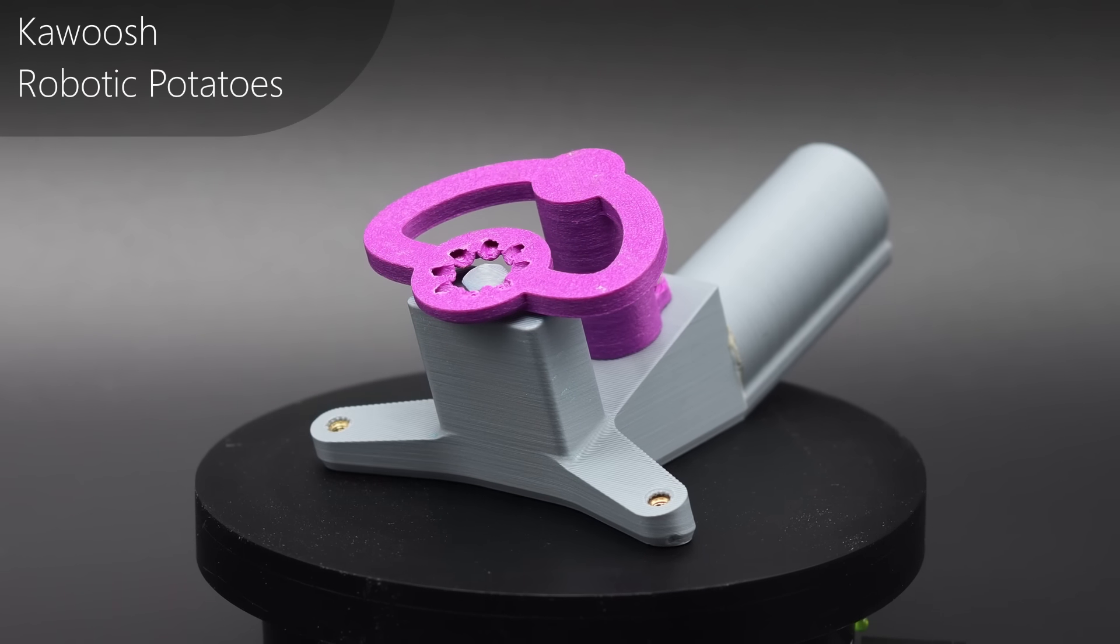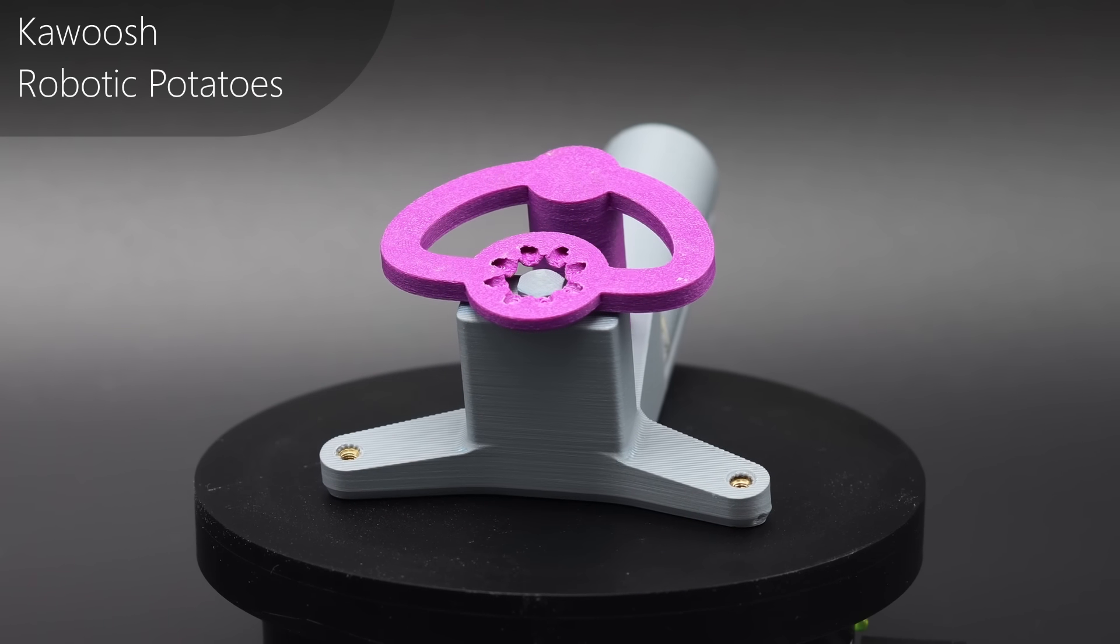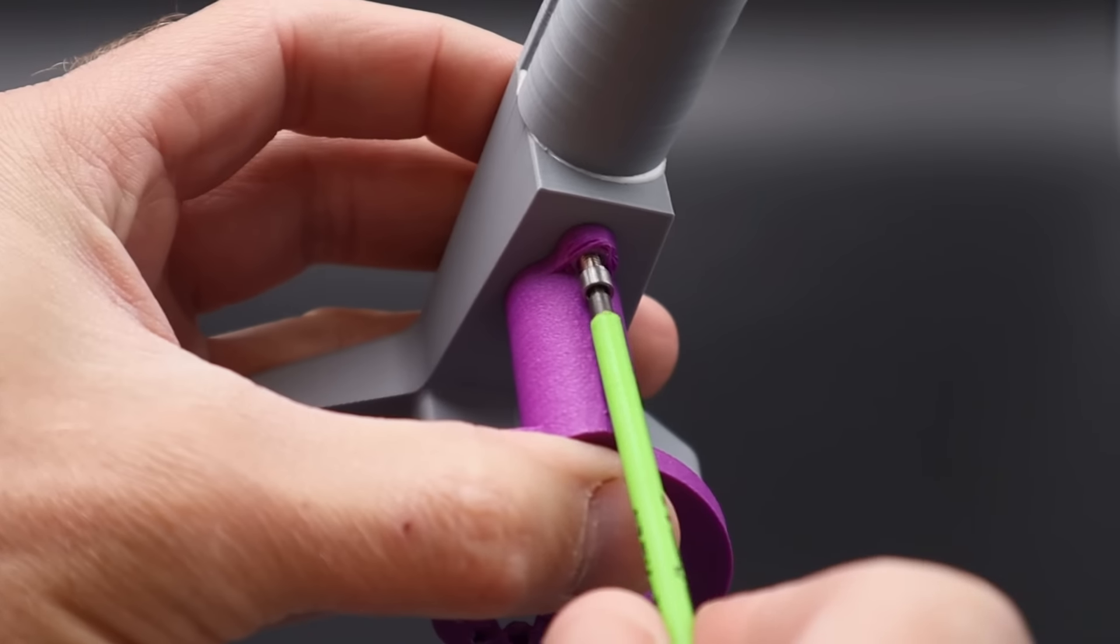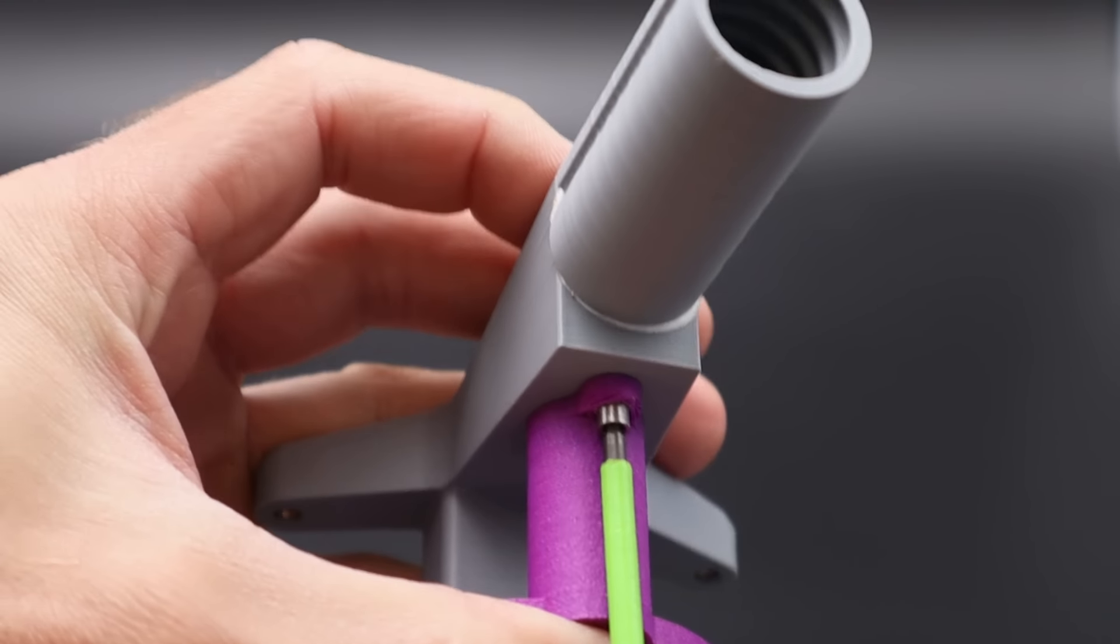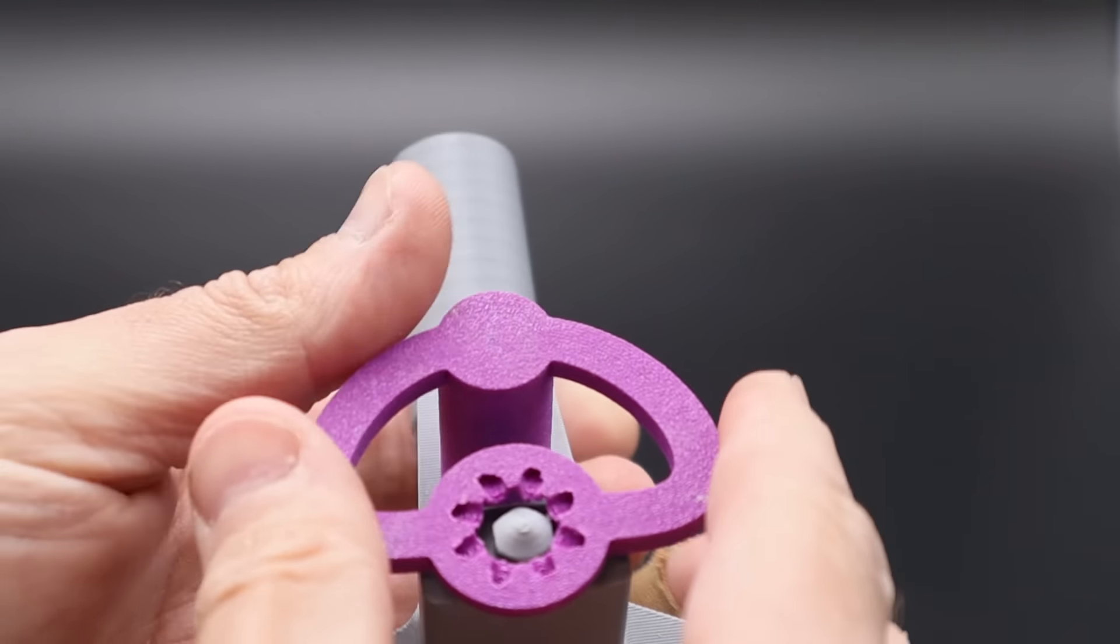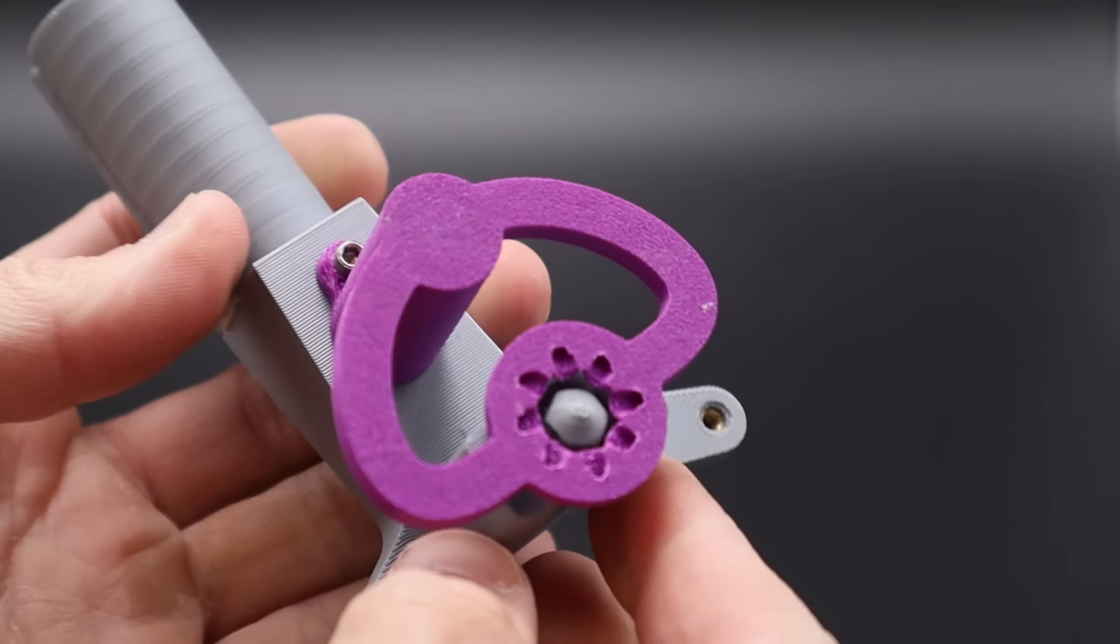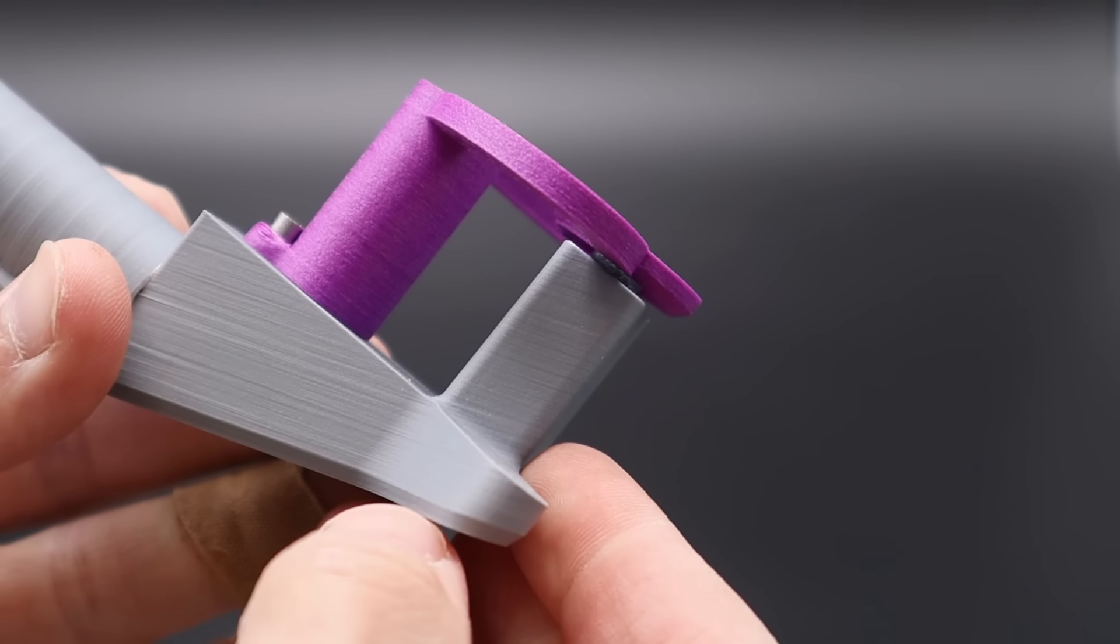Next up we have the Kawoosh by Robotic Potatoes and this is the first one with only a single screw or a single connection. This is a minimalist design for sure. I'm not sure that on a printer of this speed that that single screw is actually a great idea, but it did make it through all of the tests in one piece at least.